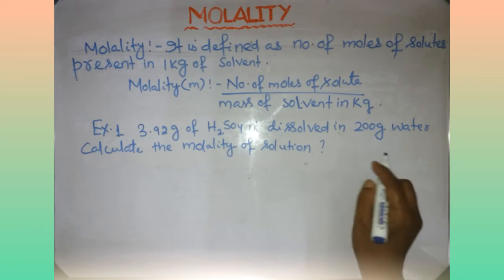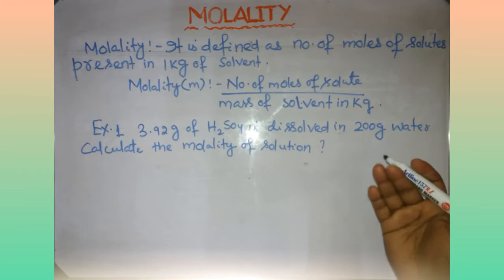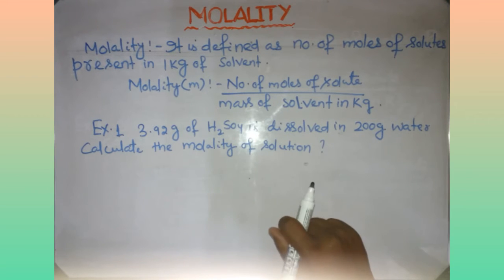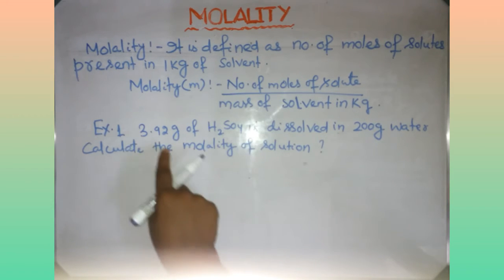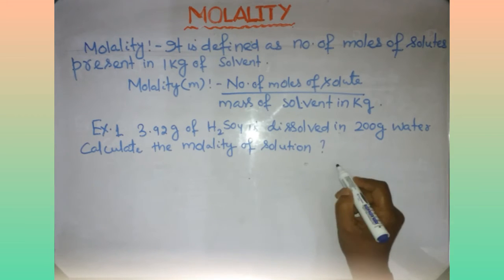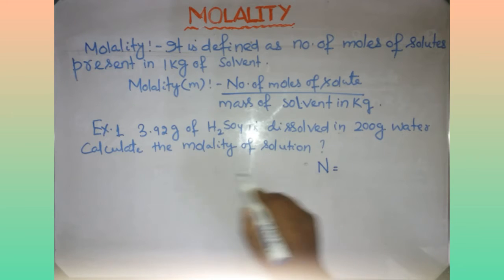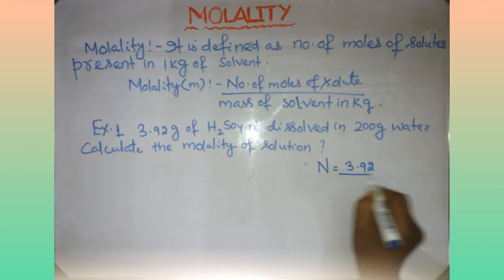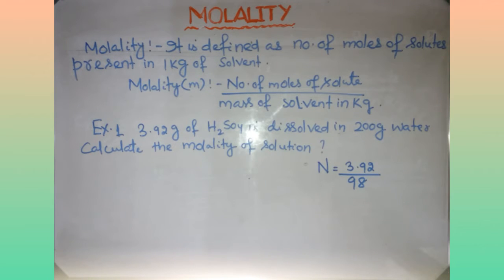The number of moles of solute is equal to the mass of the solute upon the molecular mass of the solute. Here we are studying H₂SO₄. So the number of moles of solute, denoted as n, equals mass of solute 3.92 grams upon the molecular mass of H₂SO₄.